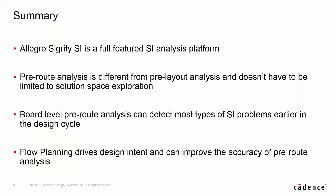In this demo, you've seen just a few of the features found in Allegro Sigrity SI. We've seen that pre-route and pre-layout are in fact different types of analysis, and that pre-route can be used to detect SI problems earlier in the design cycle. Pre-route is the best time to find out if you need any terminators, as they are too painful to add post-route. And finally, we've seen that because flow planning drives design intent in terms of how the routing will take place, it can be useful at the pre-route stage to improve the accuracy of SI analysis.